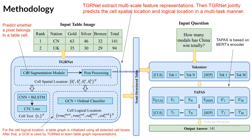After the cell segmentation module, post-processing is done for cell spatial location. The cell spatial location is bounding box information in the form of (x, y, width, height) labels. This bounding box information goes to a CNN module, and with a BiLSTM they find the CTC loss for cell text recognition.